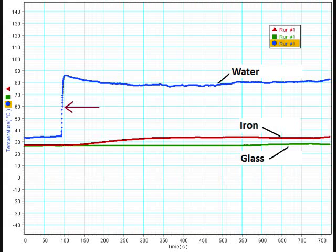As we can see from the graph, the sharp increase in temperature is due to the introduction of hot water into the pot. Another observation is that the temperature of the iron rod is higher compared to the glass rod.